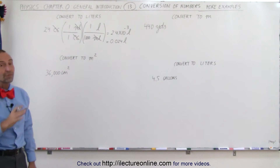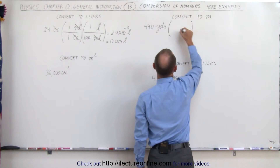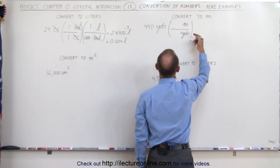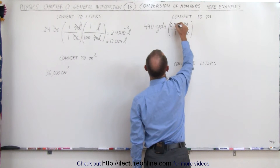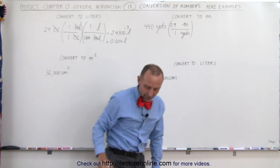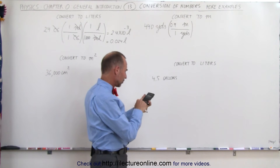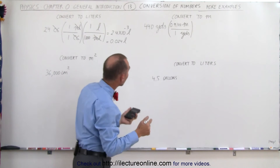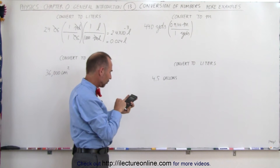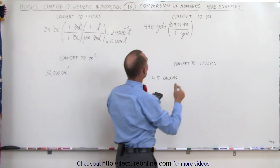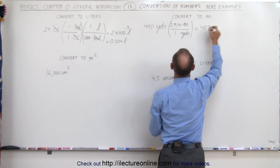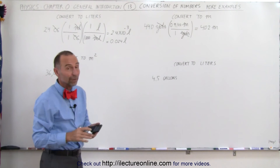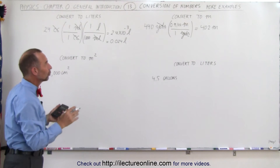Now converting yards to meters, there should simply be a single conversion factor. We want to get rid of yards, so yards goes on the bottom and meters goes on the top. The conversion is that one yard is 0.9144 meters — 2.54 times 36 equals 91.44 centimeters, so 0.9144 meters. Multiplying 440 yards gives us 402 meters. Notice yards cancels out and we're left with meters, so 440 yards around the track is approximately 402 meters to three significant figures.